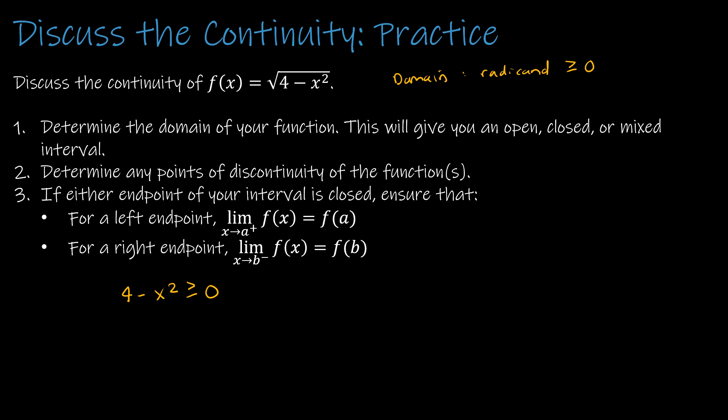If I add x squared to each side I get 4 is greater than or equal to x squared, which we can rewrite as x squared is less than or equal to 4. Taking the square root of 4 gives plus or minus 2, so this means negative 2 is less than or equal to x is less than or equal to 2. That tells me the domain is not everything — the domain is negative 2 to positive 2, both closed. The only points where this would be discontinuous are outside of the domain, so we don't have to worry about them.